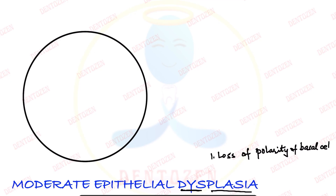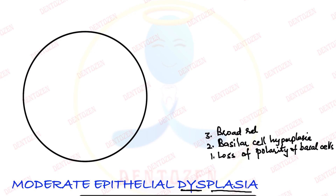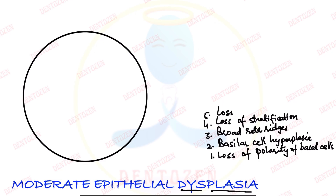These cells have increased in number, so the next feature is basilar cell hyperplasia. To accommodate these increased basal cells, rete ridges become broad — broad, bulbous, or teardrop-shaped rete ridges. There is also loss of the layered arrangement of cells, that is loss of stratification. Within the cells we can see spaces, so that is loss of cohesion. We can also see disordered keratin formation, which is dyskeratosis.